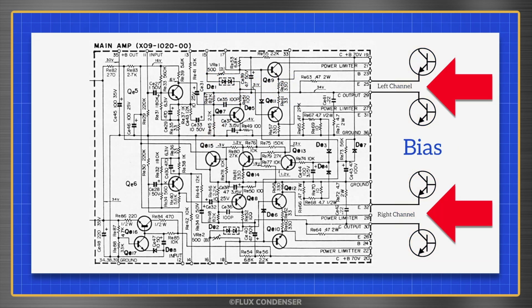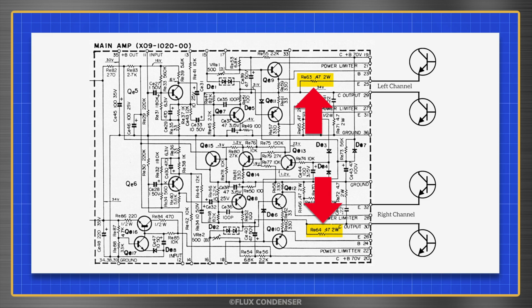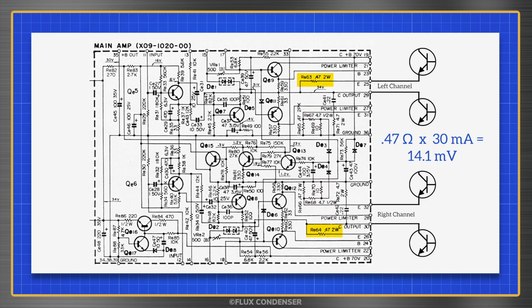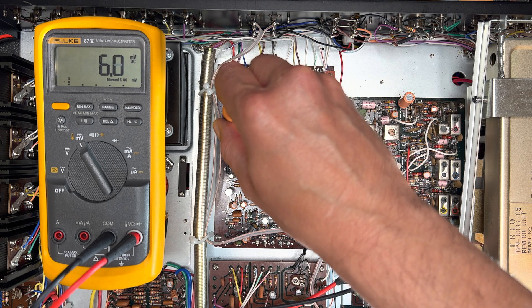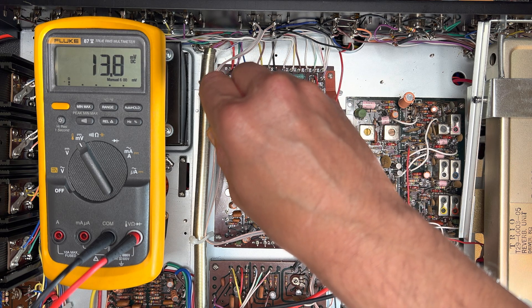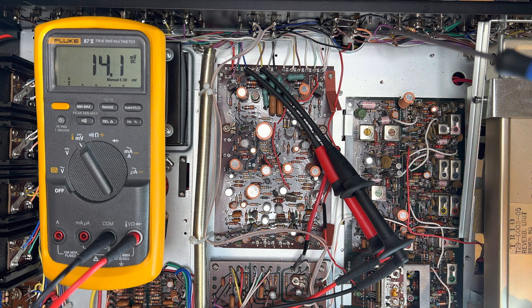To calculate idling, or bias current, we measure the voltage across the emitter resistors. Each is 0.47 ohms, and Ohm's law tells us that the voltage across these resistors should be 14.1 millivolts. Also note that there are two trimmers, which allow us to adjust this voltage. Let's adjust VRE1 until we have about 14.1 millivolts. Right about there. Stay. Stay. Good boy.